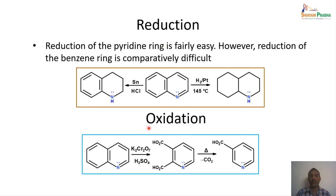For reduction and oxidation of Quinolines: tin and HCl reduction partially reduces only the pyridine ring, whereas strong metal catalysts like palladium and hydrogen reduce both the aromatic and pyridine rings completely. For oxidation, strong oxidizing agents like potassium dichromate and sulfuric acid cleave the benzene ring, giving a dicarboxylic acid, which on heating loses CO2 to give nicotinic acid.